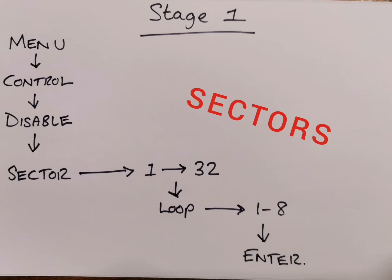Type in the number 1 through to the number 32, then press loop or press card depending on the age of the panel. This should be found above F3. Now press number 1 through to the number 8, now press enter using F2. Well done, you have successfully disabled the sectors, but we are not done yet, so pay attention.